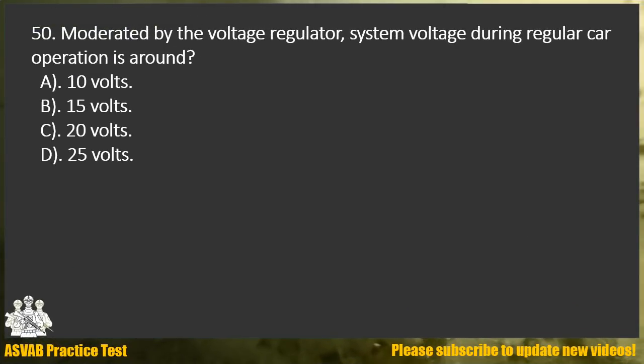Question 50. Moderated by the voltage regulator, system voltage during regular car operation is around: A. 10 volts. B. 15 volts. C. 20 volts. D. 25 volts.